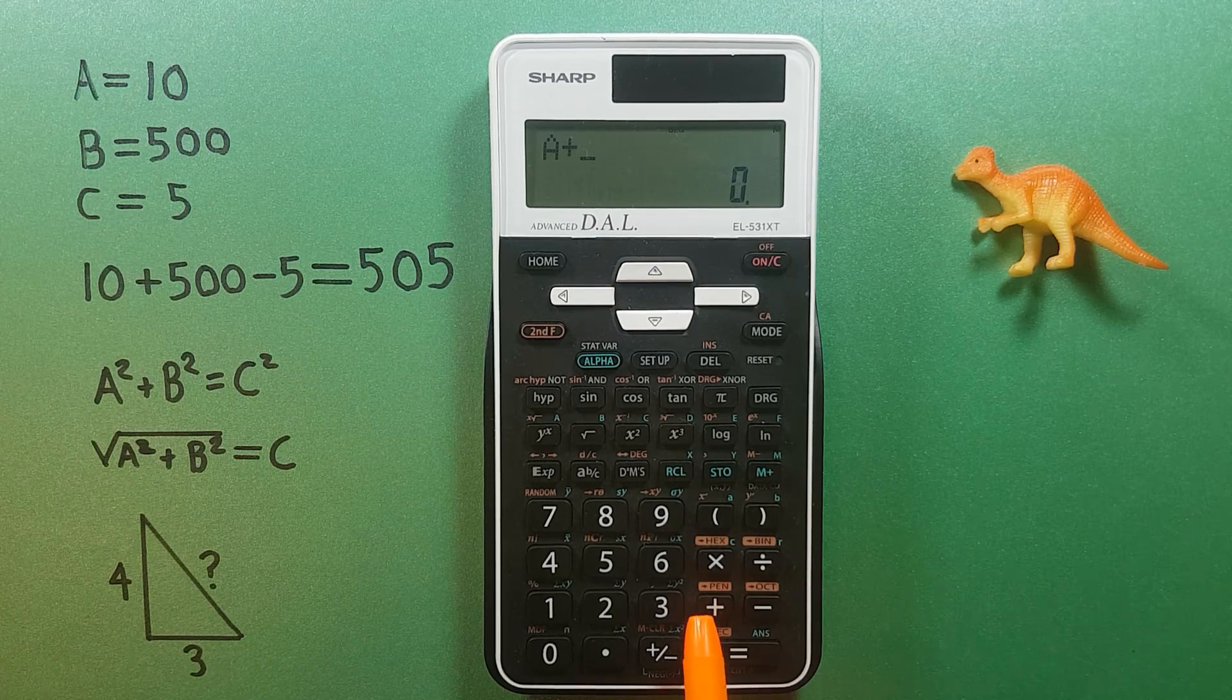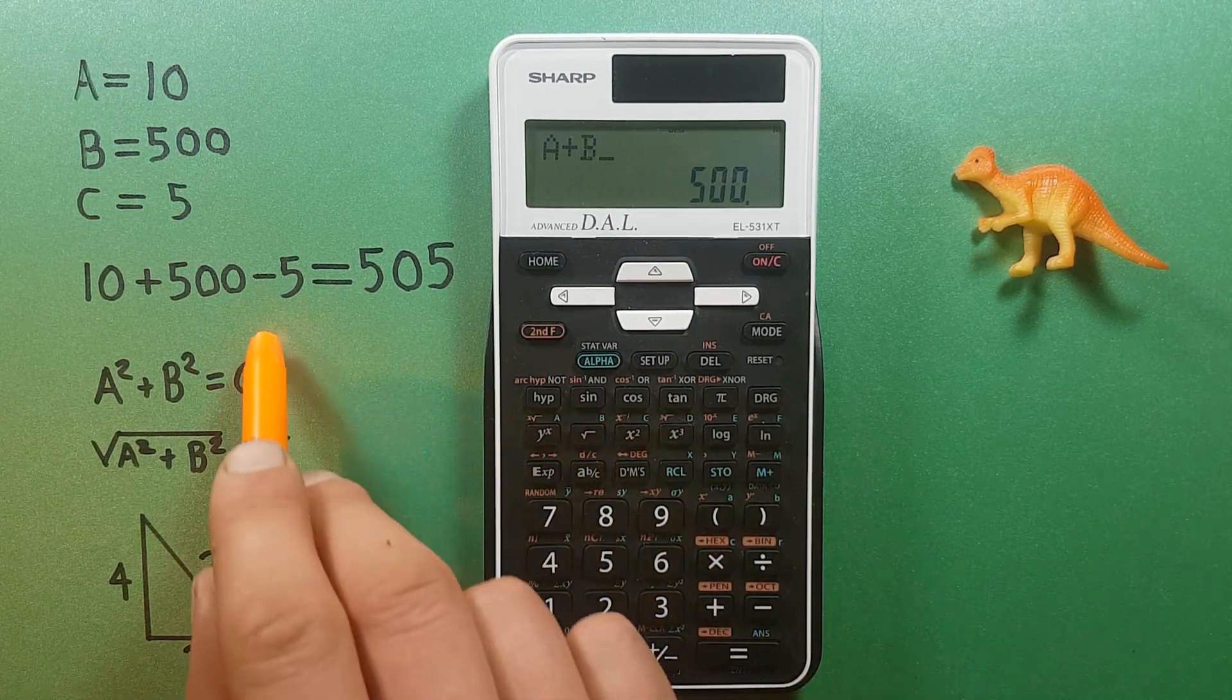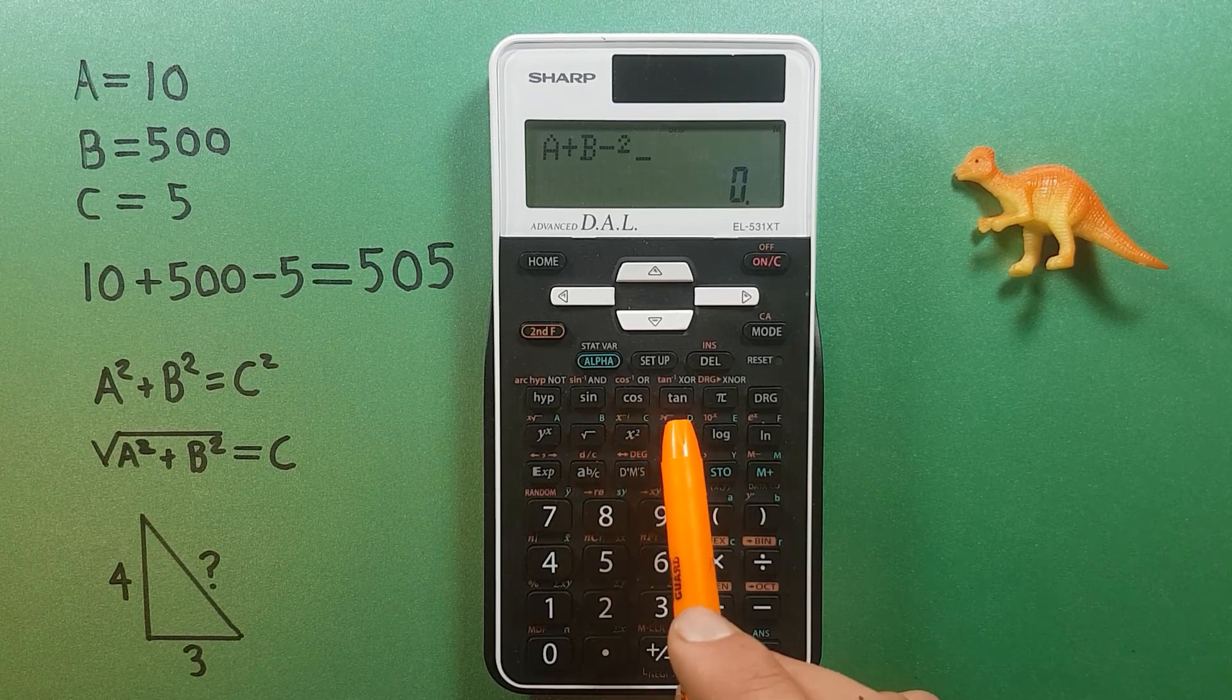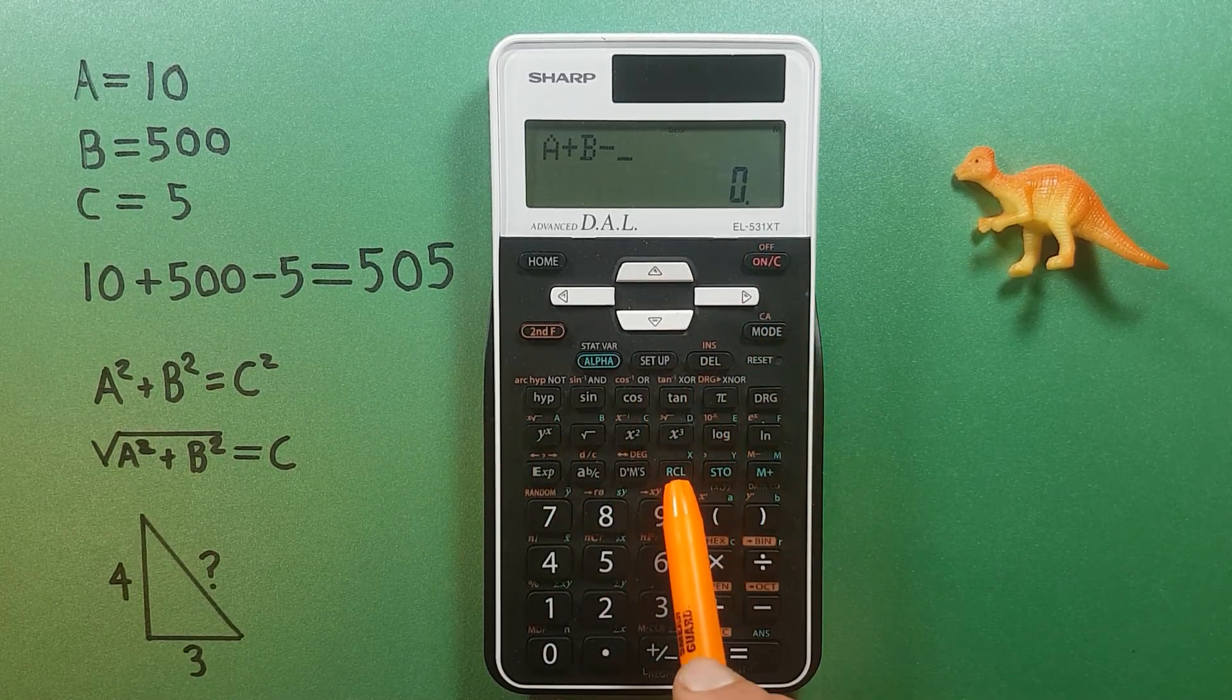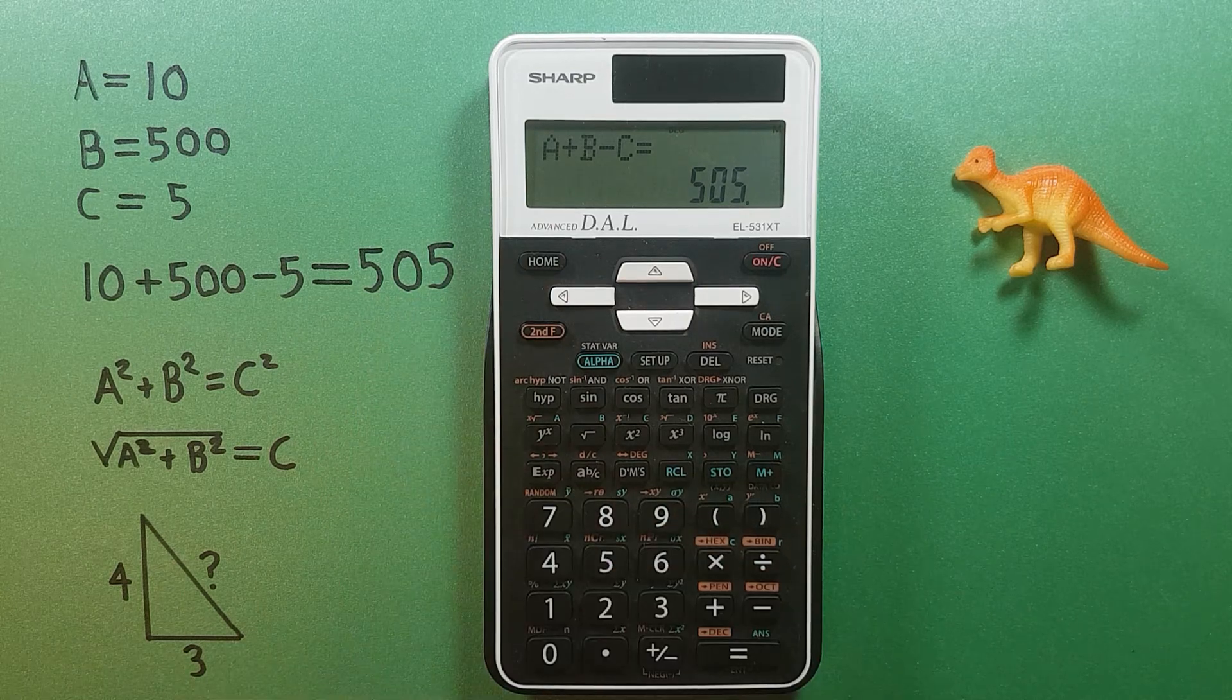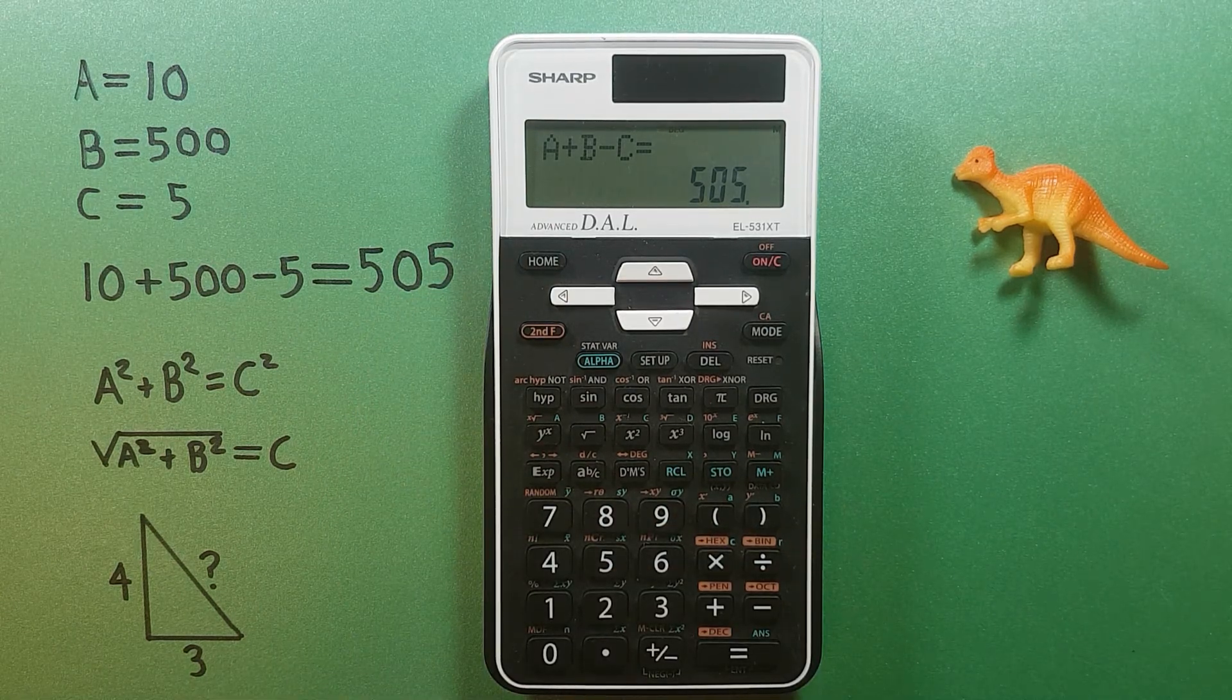Minus our C slot, recall C. Equals 505, which is correct. We can also use these storage slots for complex equations and known formulas.